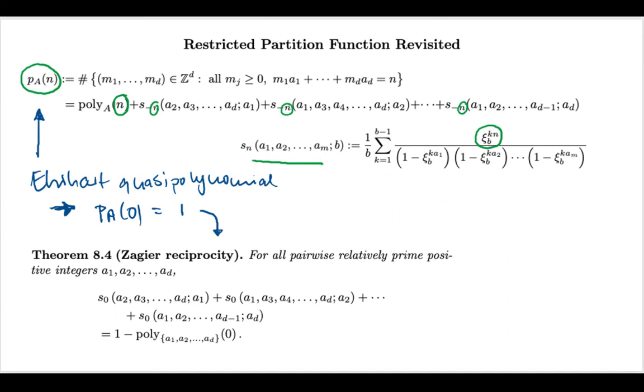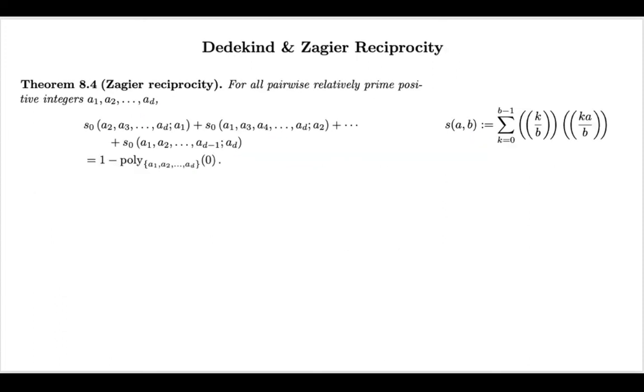I should mention that these kinds of reciprocity theorems are different from Ehrhart-Macdonald reciprocity. So what we're doing here is we have a set of parameters, and reciprocity in this case says that we take this set of parameters and cyclically permuted in our expression, so in this case a Fourier-Dedekind sum. So individually each of these sums are complicated animals, but somehow if I sum them up in a cyclic fashion, I get sort of a closed form. This is simply a rational expression in the parameters a_1 through a_d.